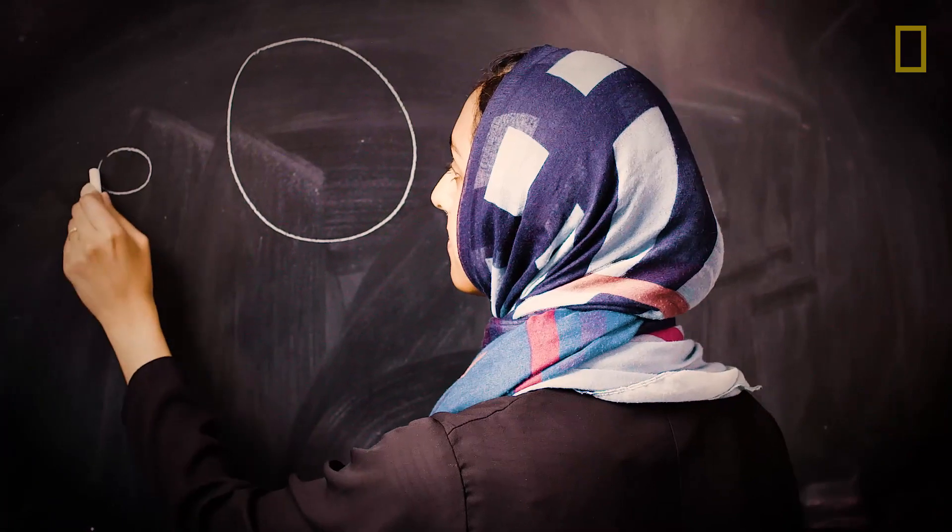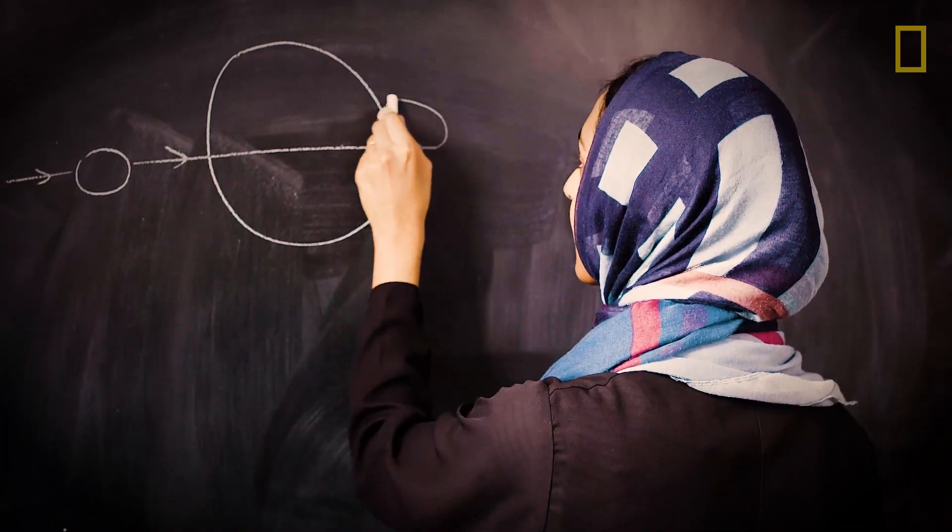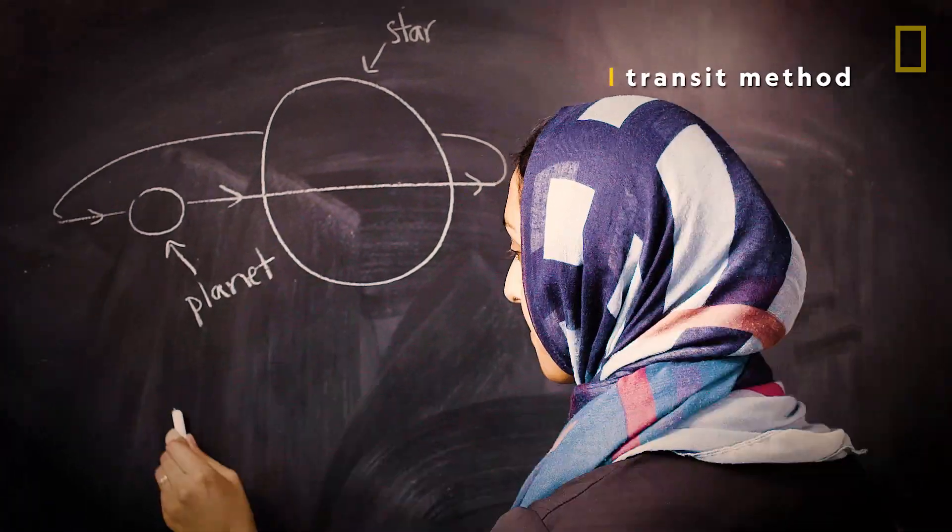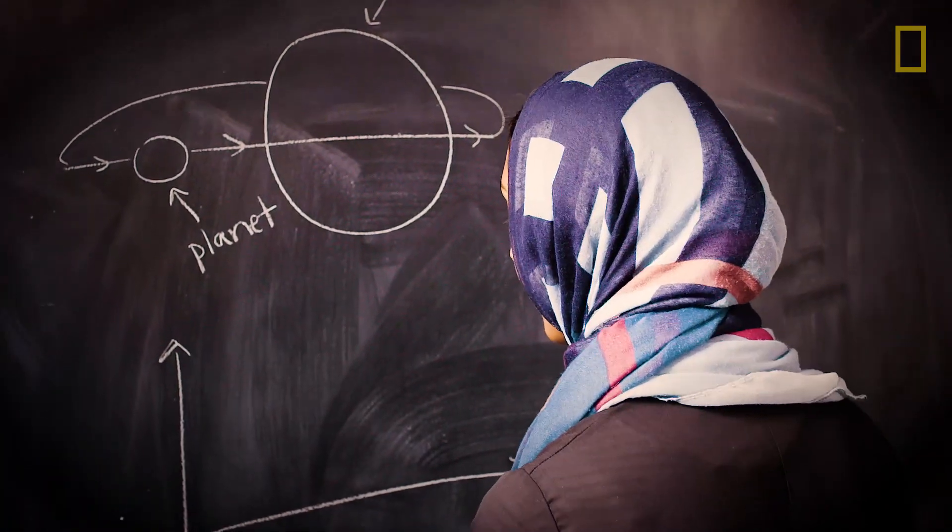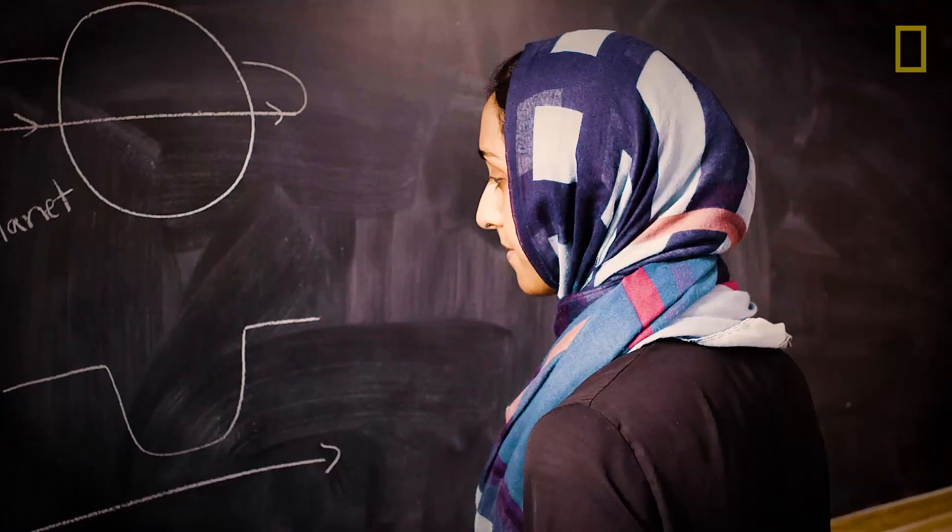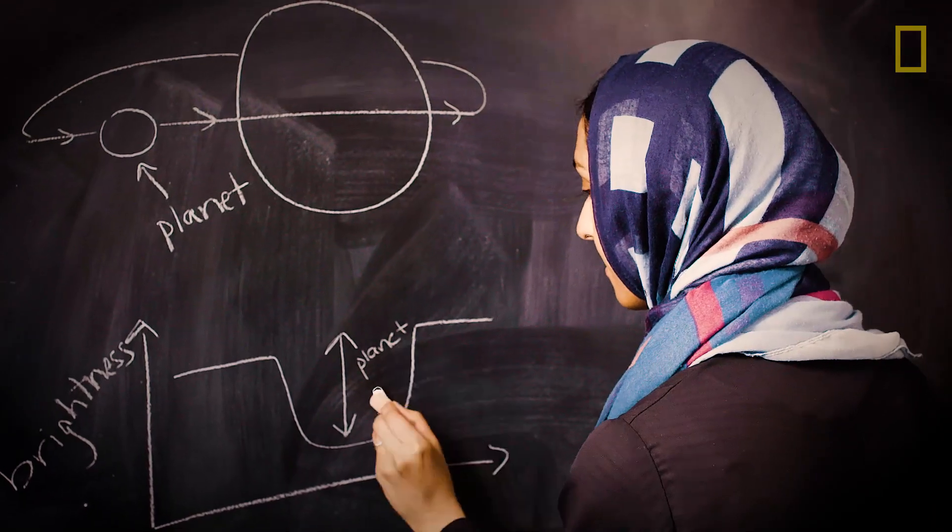To find these exoplanets, Munaza uses an advanced technique called the transit method. It involves looking for periodic changes in a star's brightness due to an orbiting exoplanet passing in front of, or as astronomers call it, transiting its star.